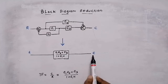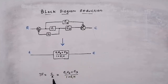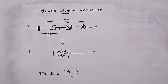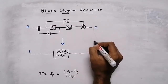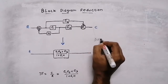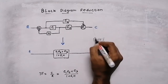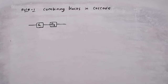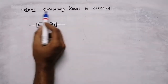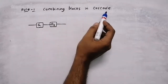What is transfer function? Output by input. Before doing block diagram reduction, you need to know some rules. Starting with rule number one: combining blocks in cascade.